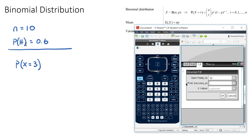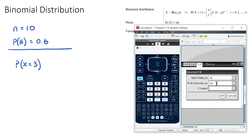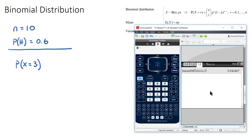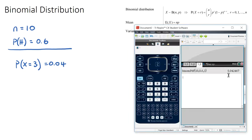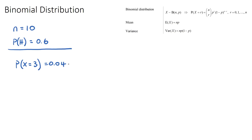Using PDF, it asks us for the number of trials — which is ten — the probability of success (getting a head, which is 0.6), and the exact value we want — three. This gives us the answer 0.0425.